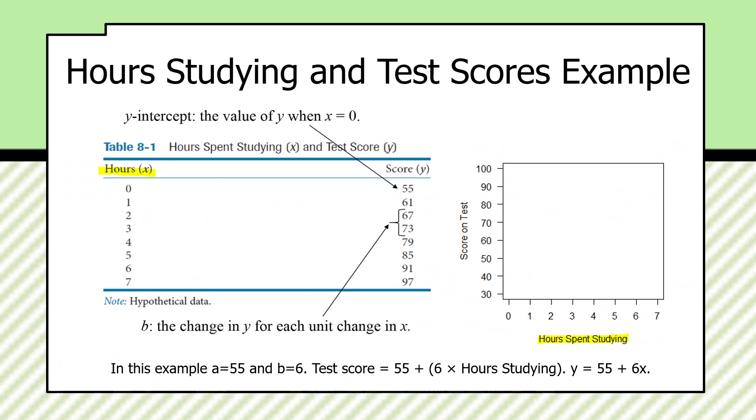And here are the values for x. She has one student who didn't study, studied zero hours, and got a 55 on the test. A student who studied one hour got a 61. Two hours, 67. Three hours, 73. You can see where this is going.